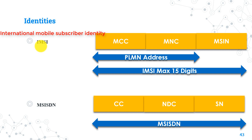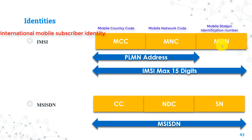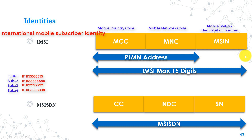Each IMSI consists of three main parameters: MCC (mobile country code), MNC (mobile network code), and MSIN (mobile station identification number). MCC is the code of the country you exist in, so all mobile operators inside the United Kingdom have the same MCC. The MNC is the code of the network inside the country, so each mobile operator in the UK will have the same MCC but a different MNC. The last one is the MSIN, which is the subscriber code inside their network. For example, if we have four subscribers in the UK Vodafone network, all of them will have the same MCC and MNC, but each will have a different MSIN.